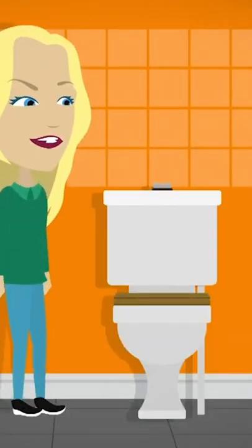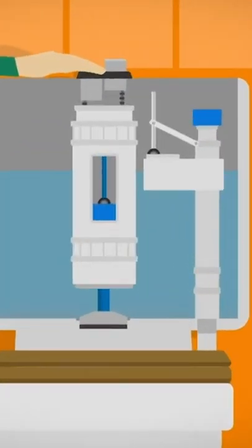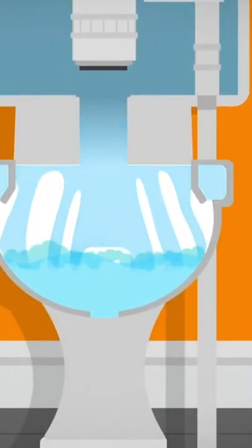When you press the flush button it moves a lever which pulls a plug out of a hole at the bottom of the cistern. Fresh water flushes out of the cistern into the toilet bowl below.